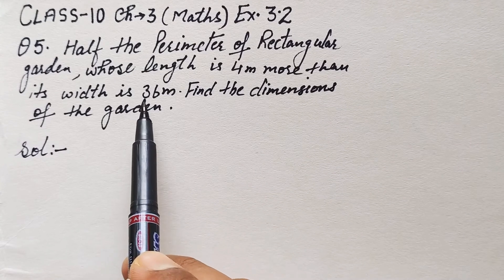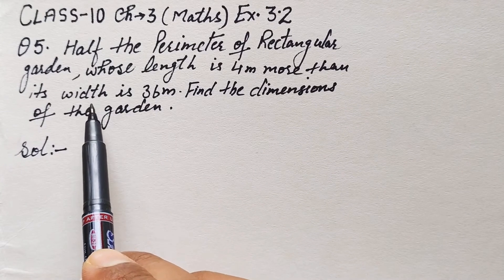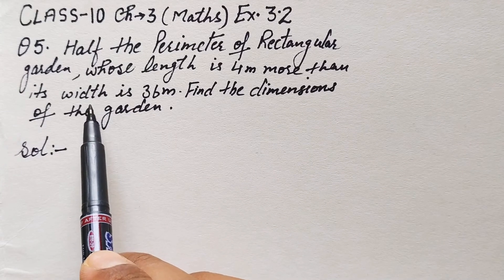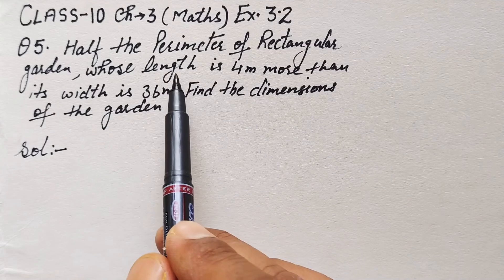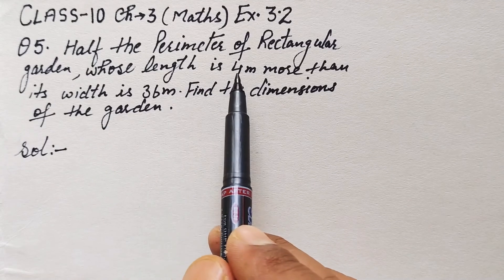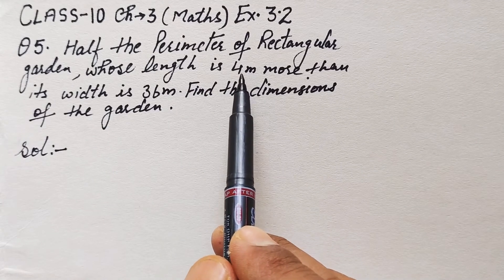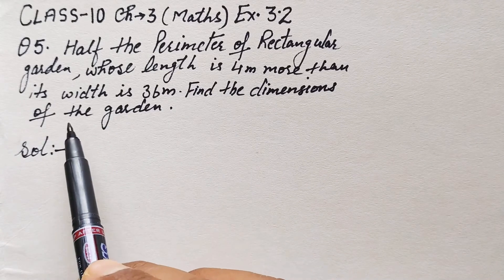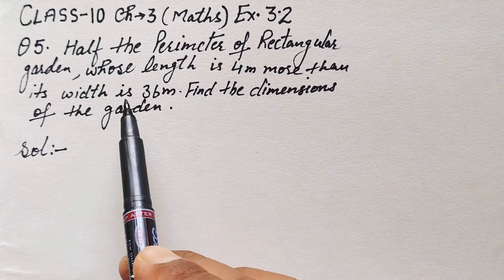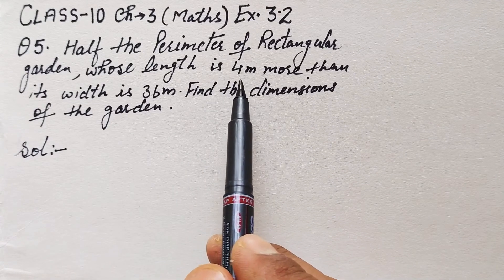Length is four meters more than its breadth, so breadth is smaller. We can assume breadth as x meters, so length will be x plus 4 meters, because length is four meters more than breadth.